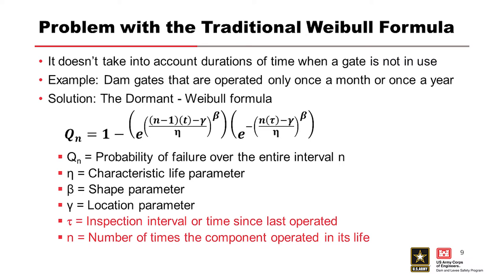And the number of times the component is operated in its life. So, what you really need to know is the inspection interval or time since last operated. If it's monthly, then if this formula is based on years, you would calculate the fraction of a year between operations of the machinery.